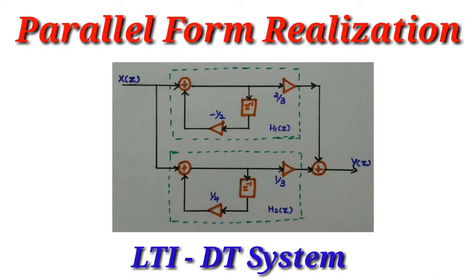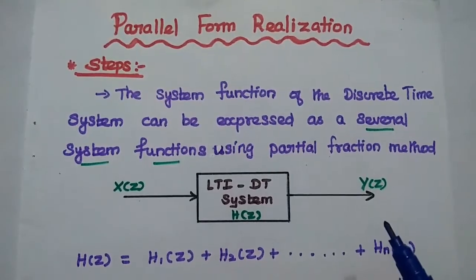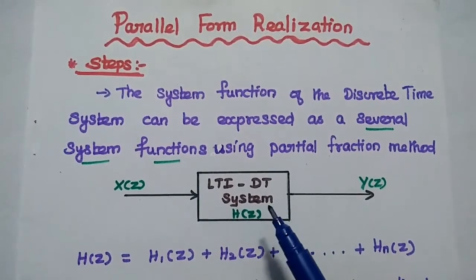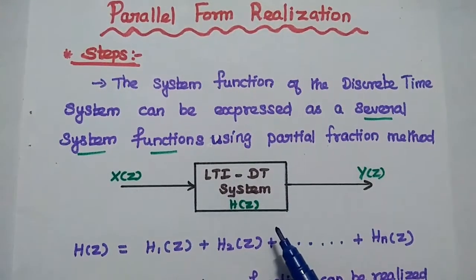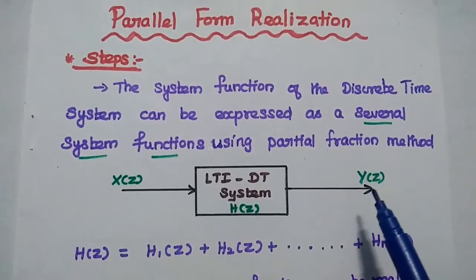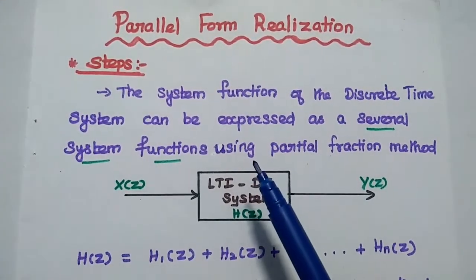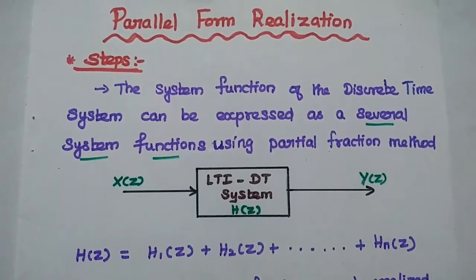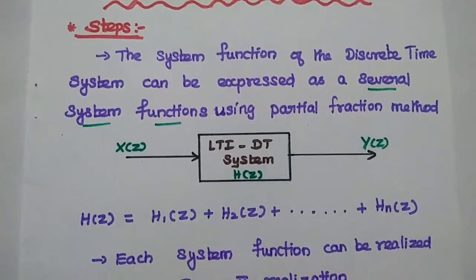Dear students, now we are going to discuss parallel form realization and solve an important problem using Z-transform. Let's start with the steps to be followed in parallel form realization. Consider the linear time invariant discrete time system with the system function H of Z, defined as the ratio of the Z-transform of the output signal to the Z-transform of the input signal. The first step in parallel form realization is to express the given system function as a sum of several system functions using the partial fraction method.